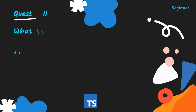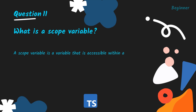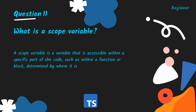What is a scope variable? A scope variable is a variable that is accessible within a specific part of the code, such as within a function or block, determined by where it is declared.